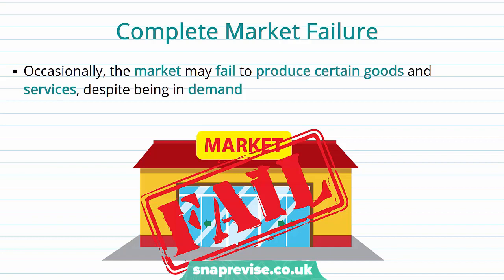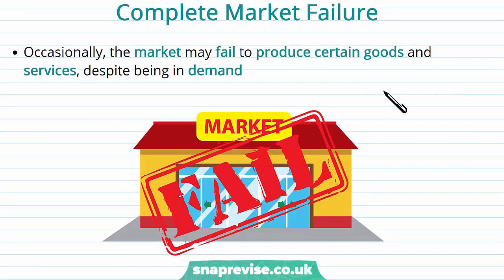Now we're going to consider two types of market failure, starting with the most extreme case: complete market failure. Occasionally the market may fail to produce certain goods and services despite there being a demand for them. We've thought about how a market has demand and supply, and how supply meets that demand. Complete market failure is the case where there is no supply to meet that demand.